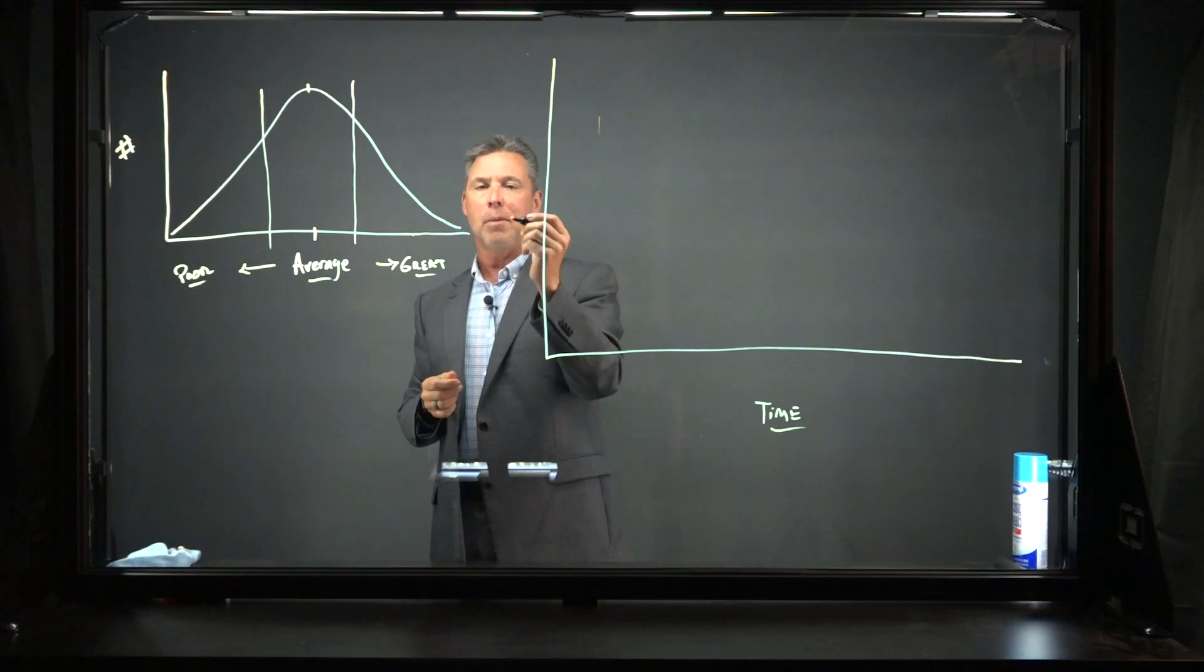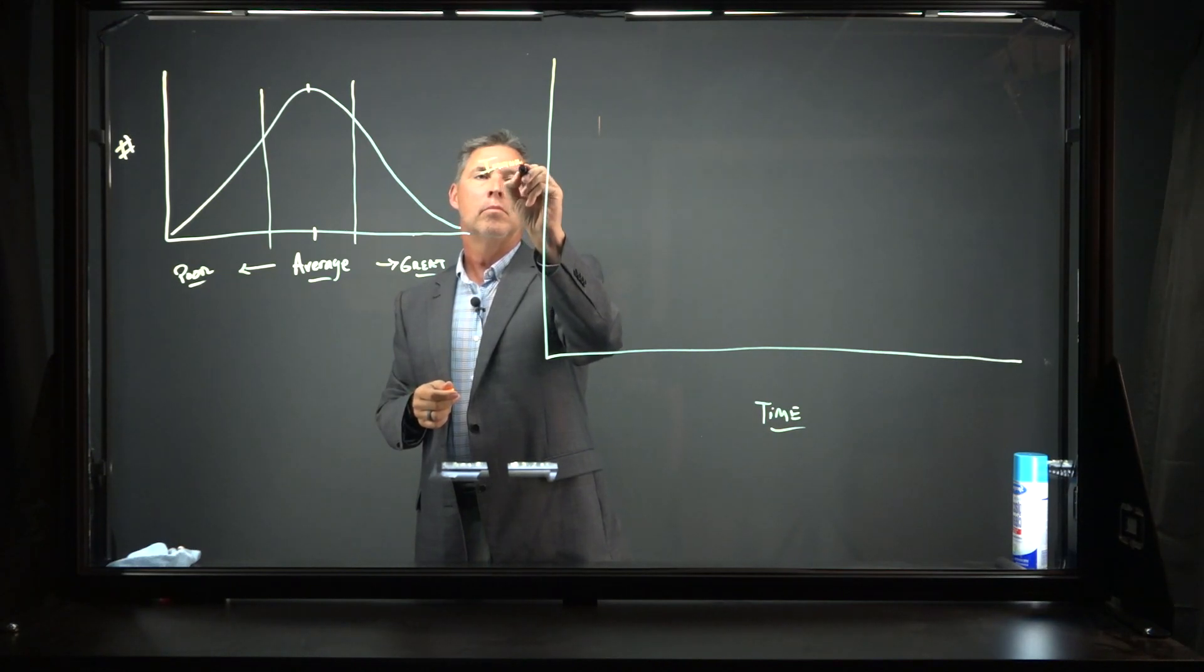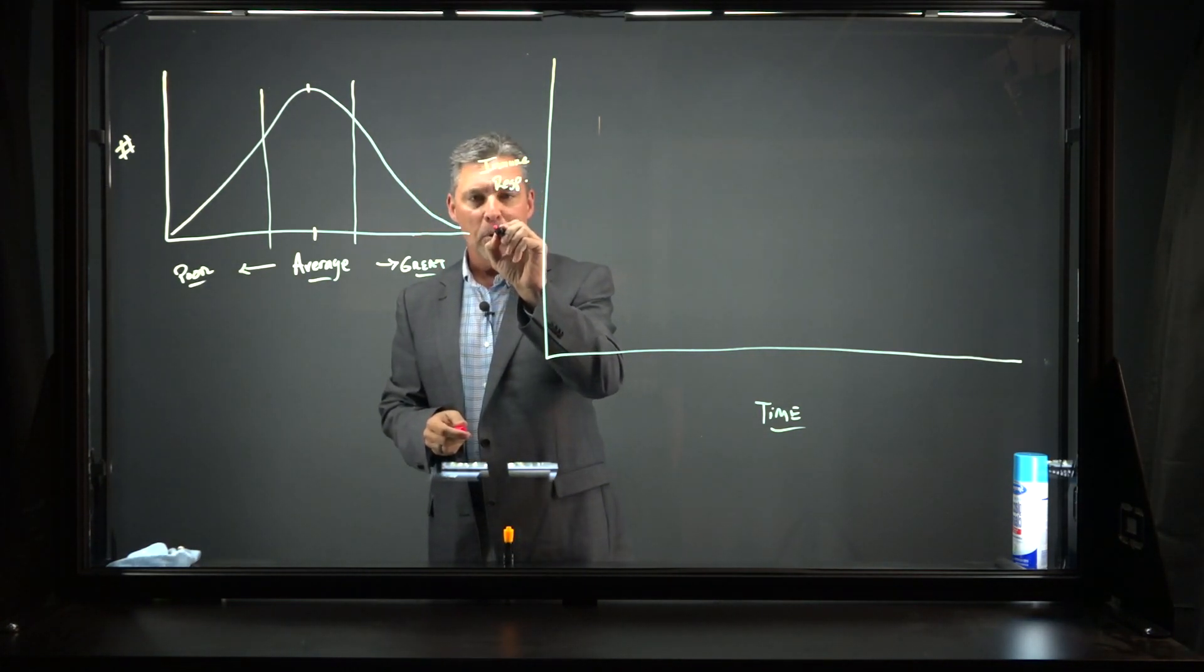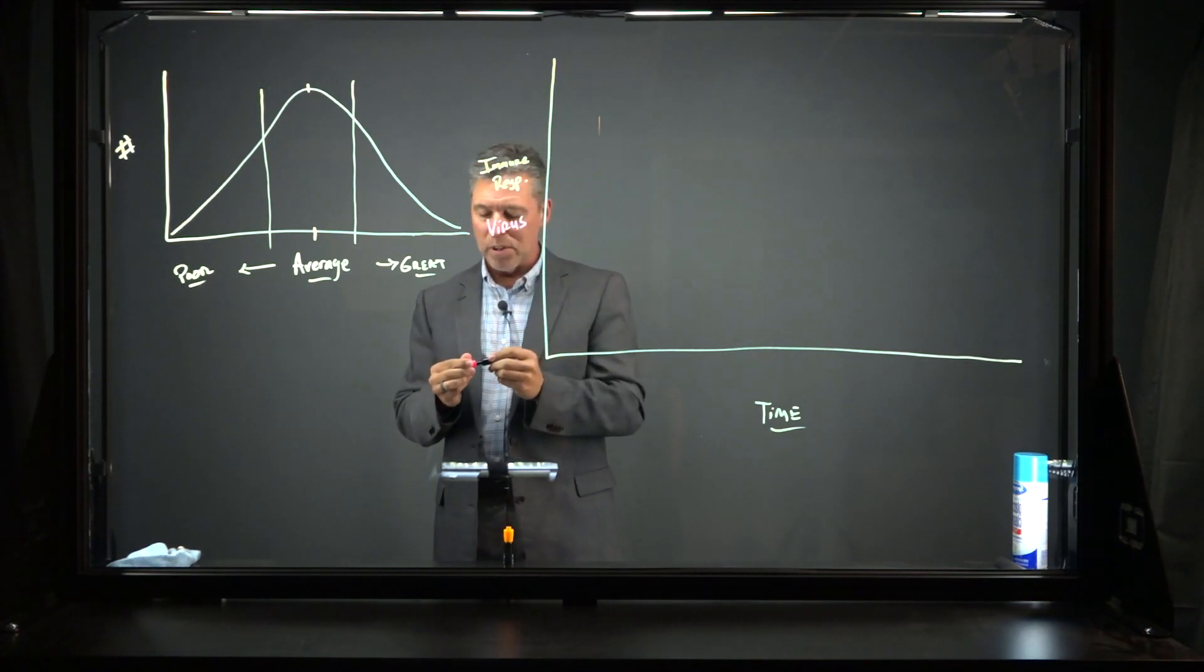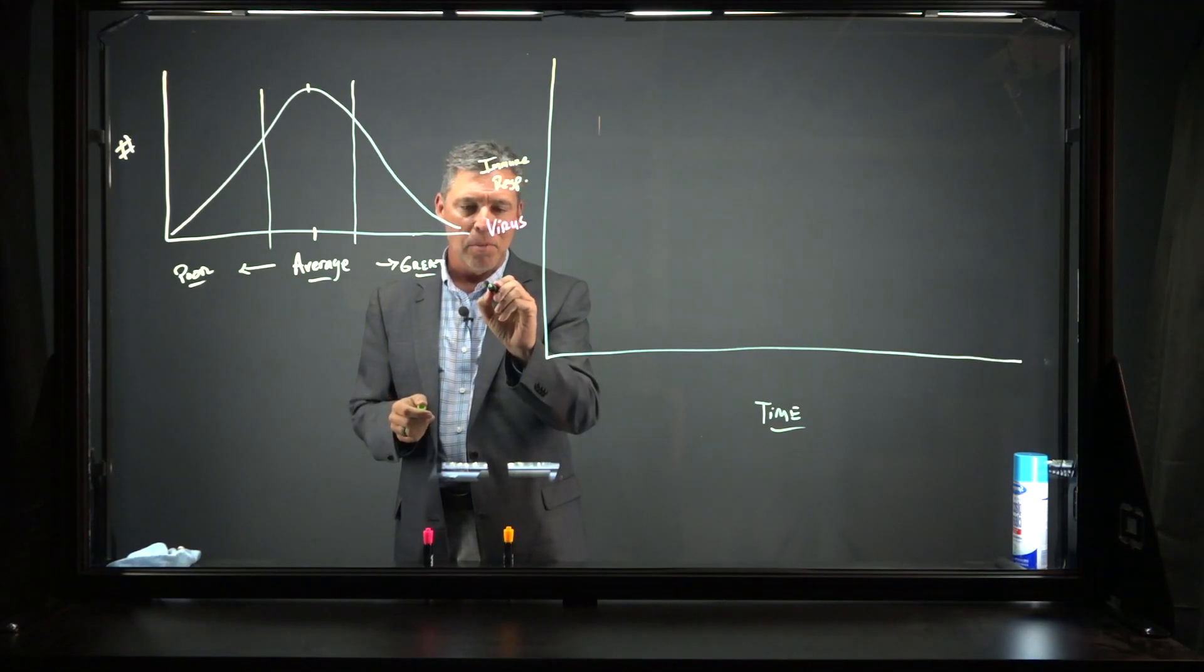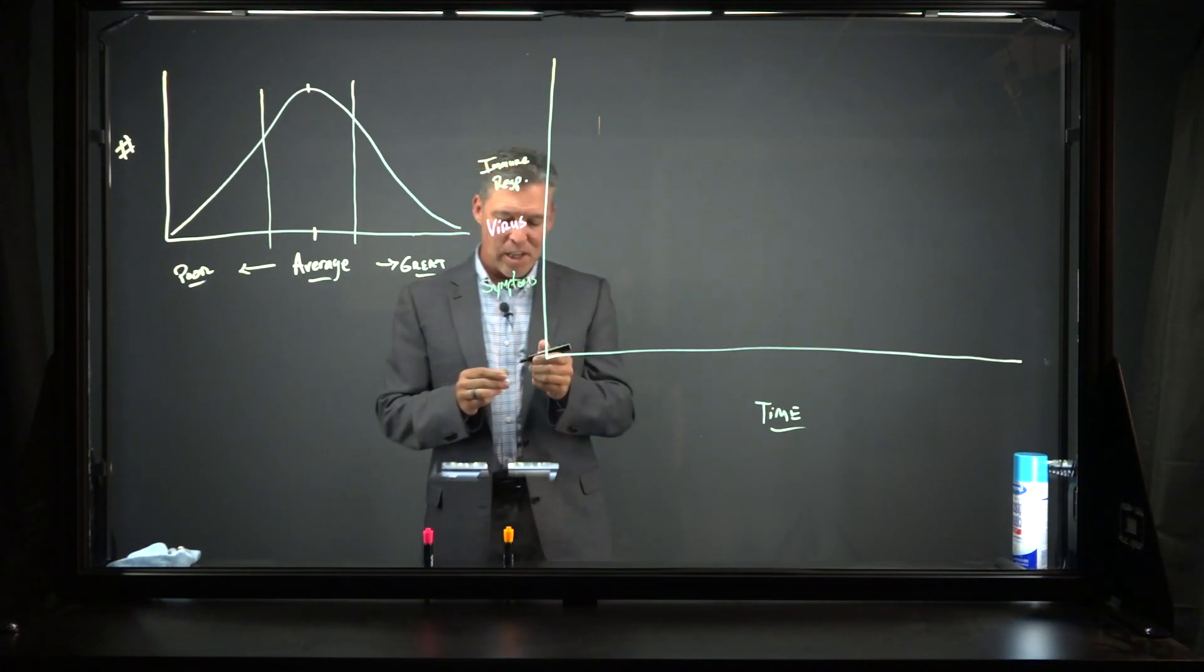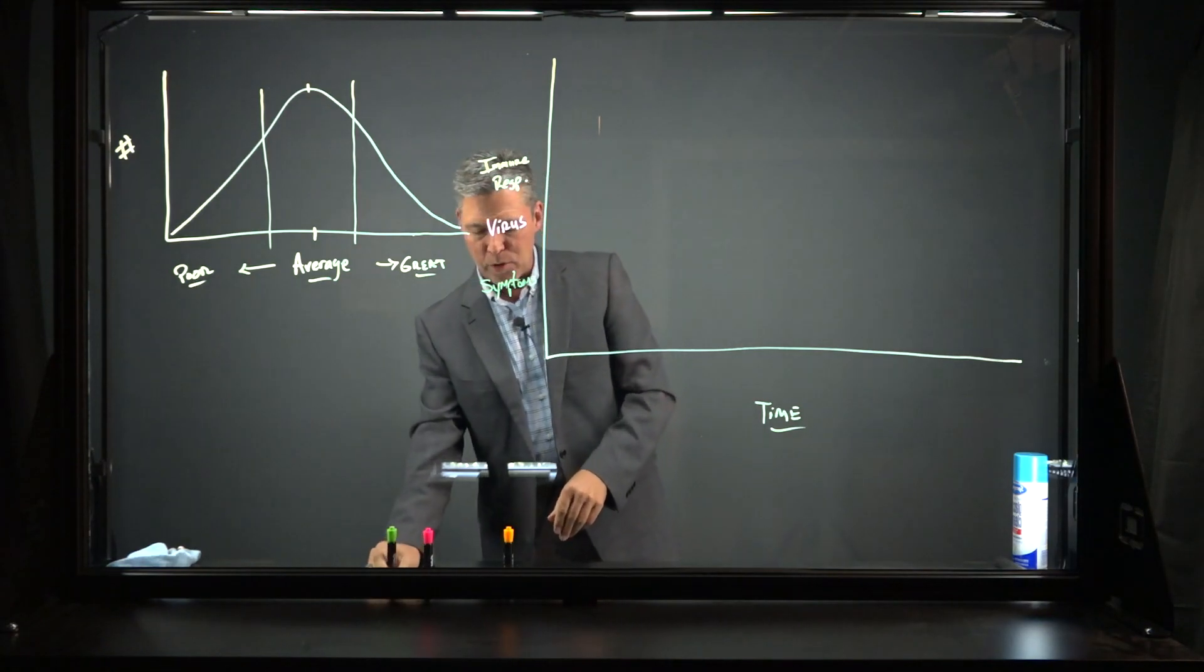And on this axis we're going to put a couple of things. In orange, we're going to put immune response. In pink, we're going to put virus or viral load is what we would typically say as scientists. And then in green, we're going to write symptoms. Hopefully you can see each of those things, and I'll try to give you an idea of how each one of those things works.